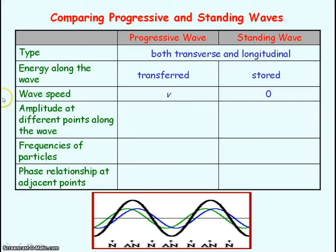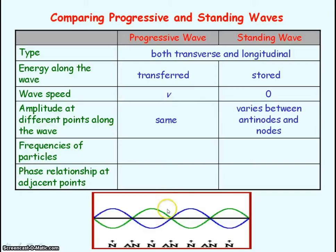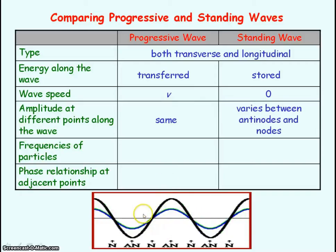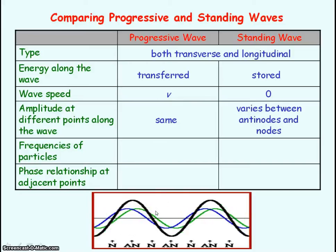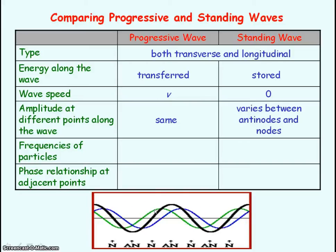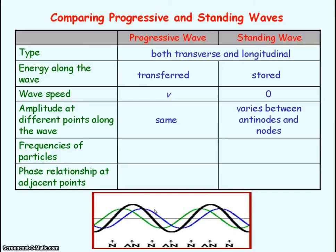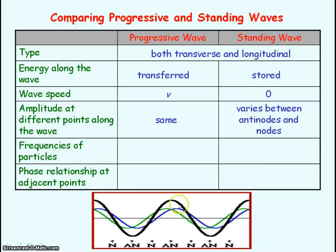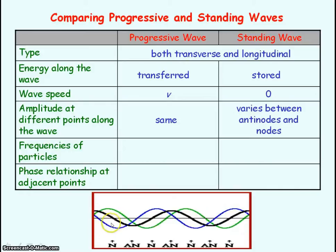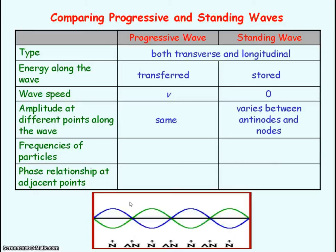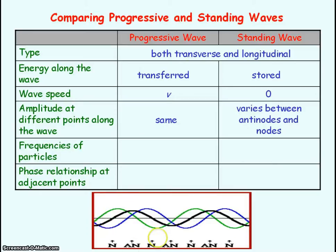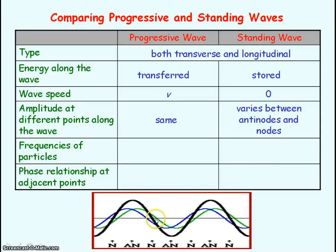Looking at amplitudes at different points along the wave: for a progressive wave — the blue and green waves — each point will have the same amplitude, assuming no energy loss. Remember, amplitude represents the maximum displacement from equilibrium. Whereas for the standing wave, represented by the black line, the amplitude varies between maximum amplitude at anti-nodes and zero amplitude at nodes.